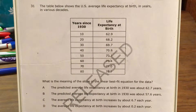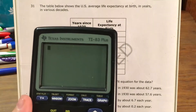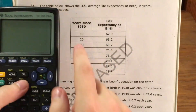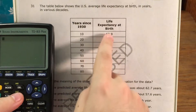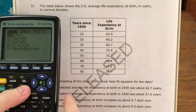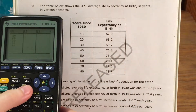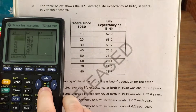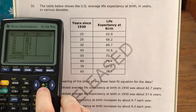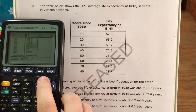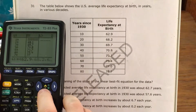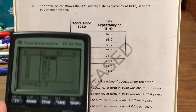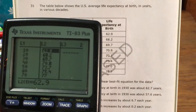We're going to need to do a linear regression in the calculator. I have my calculator here. I want to start by putting all this data into list 1 and list 2 in the stat edit menu, which I've gone ahead and done — 10 through 80, and then the corresponding y value to match.